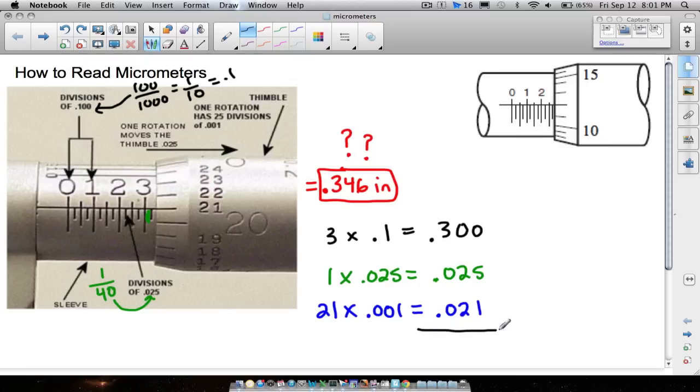Now we can finally see where this answer comes from. If you add up all these decimals, 0, 5, and 1 is 6, 0, 2, and 2 is 4, 3, 0, 0, that's going to be 3, and bring down your decimal. As you can see now, that's where the 0.346 comes from.